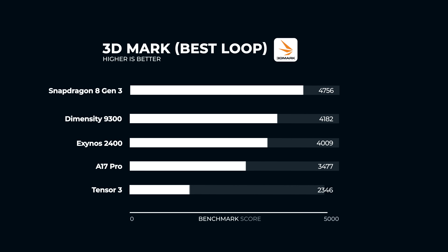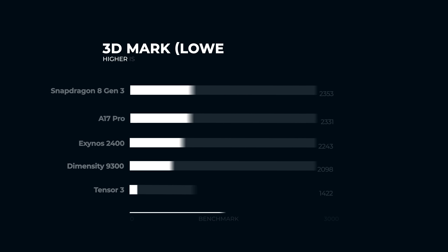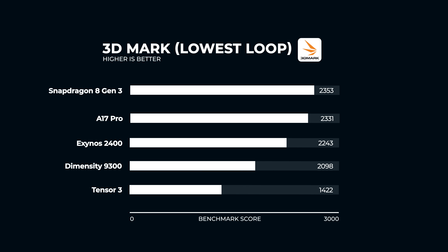For the best loop, Snapdragon is at over 4,700 points, with Dimensity also doing a super good job at over 4,100 points. Exynos also performed very well with over 4,000 points. The A17 Pro is somewhat disappointing here with over 3,400 points, and the Tensor has unfortunately ended up in last place. For the lowest loop, Snapdragon performed the best; shortly behind is the A17 Pro and the Exynos. Dimensity slides into fourth and Tensor in fifth place.